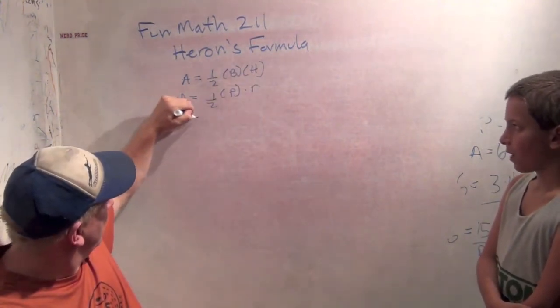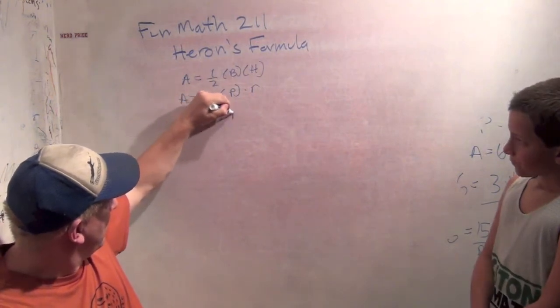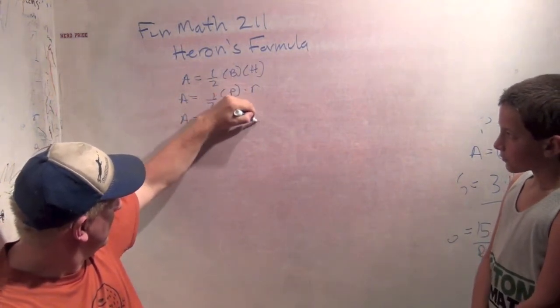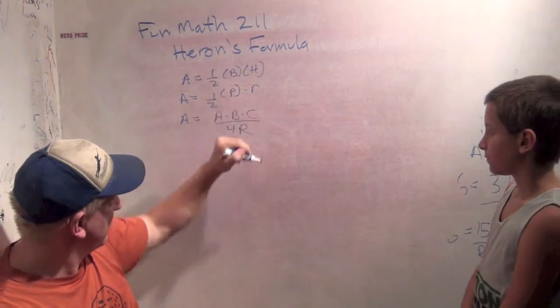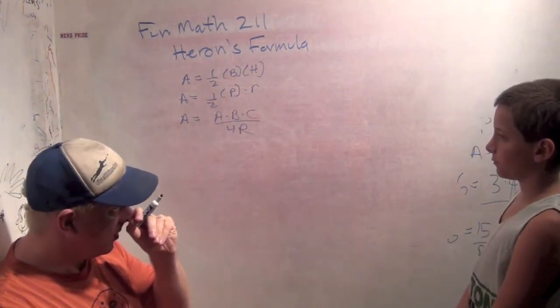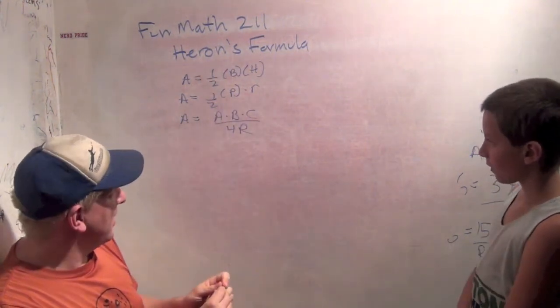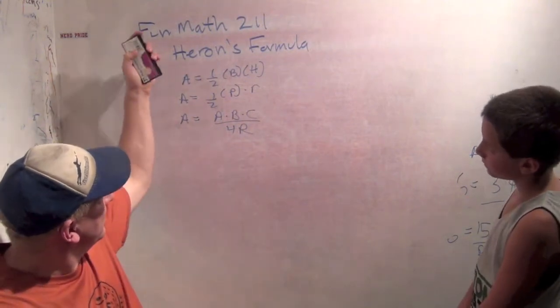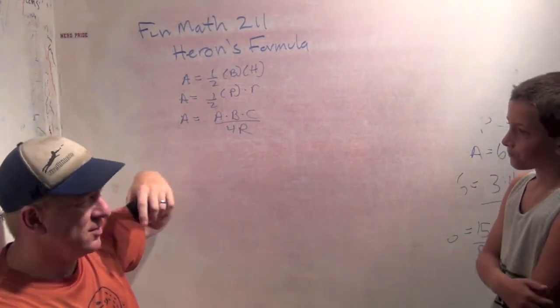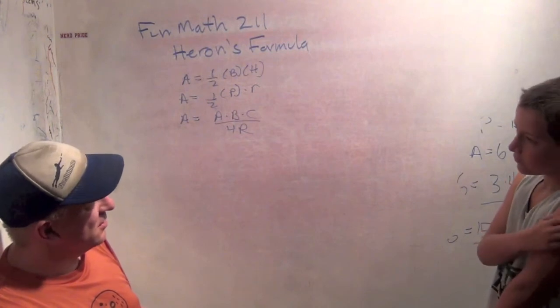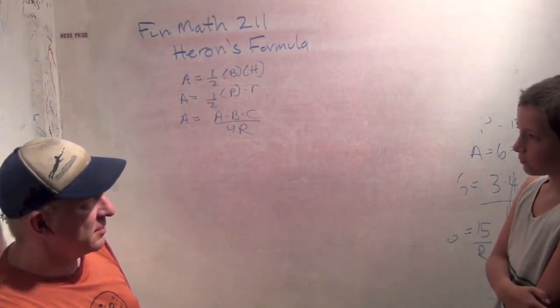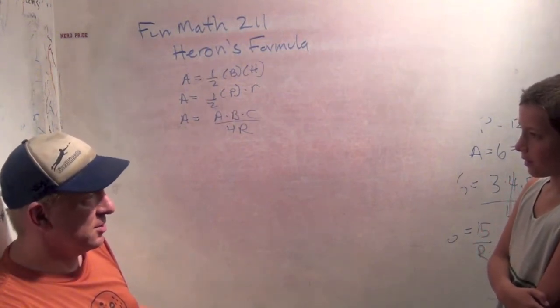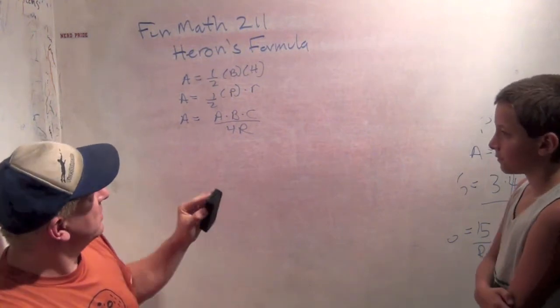That was cool. And then we learned the area is the side lengths A, B, C multiplied together, over four times the radius of the circumscribed circle. Holy moly. Today we're going to learn an old one that came from ancient Greece. It's Heron of Alexandria. Maybe he was from Egypt. Alexandria is in Egypt, right? I should probably look that up.